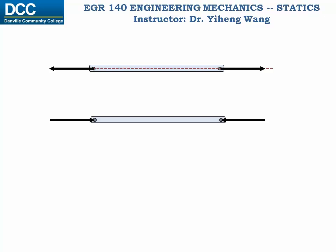On the top, the two forces pull the member, tending to elongate it, and they are known as tension or tensile force. At the bottom, the two forces push the member, tending to compress it, and they are known as compression or compressive force.